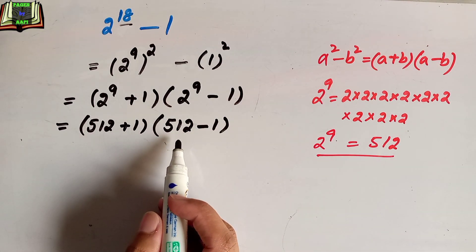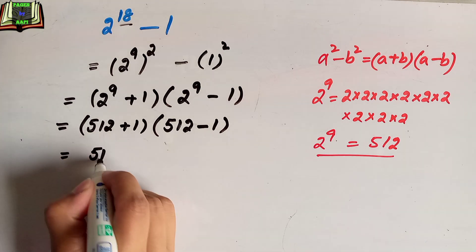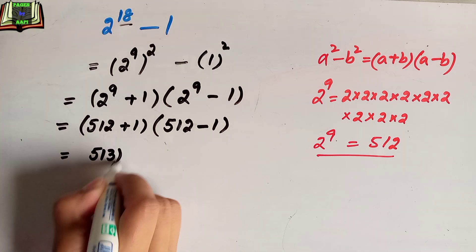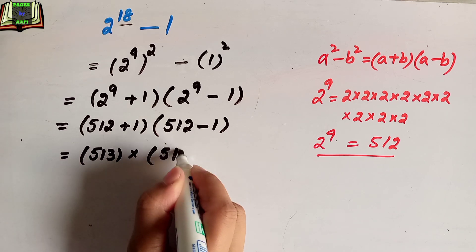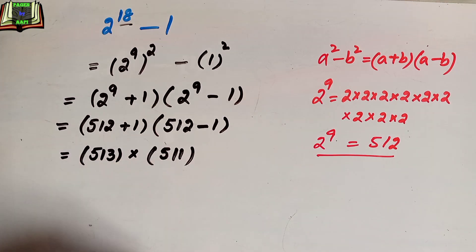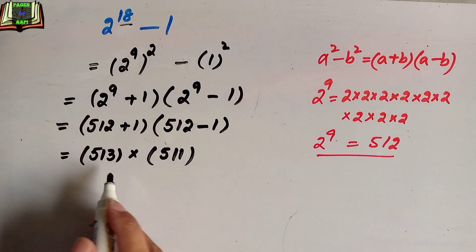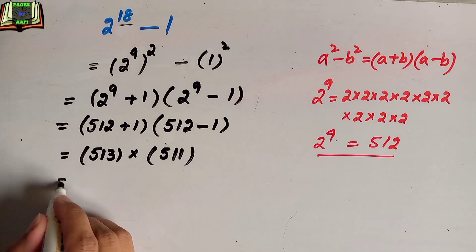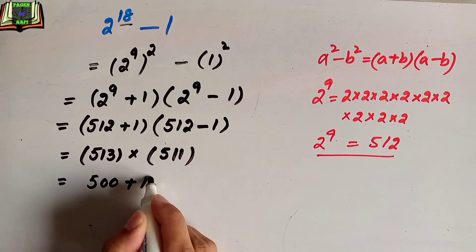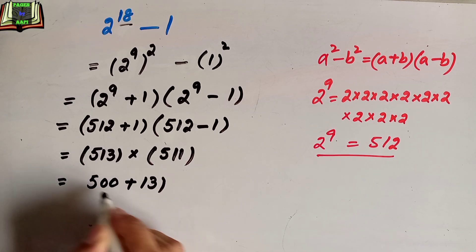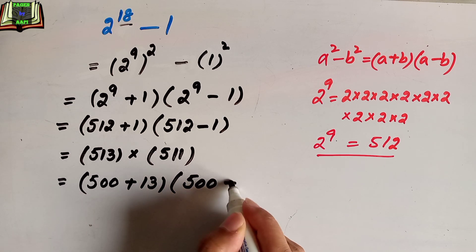In the next step, we simplify by adding and subtracting: 512 + 1 equals 513, and 512 − 1 equals 511. We can see that 513 can be written as 500 + 13, and 511 can be written as 500 + 11.